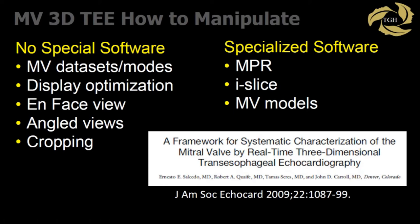What do we need to manipulate with our 3D data set? There are two groups: one is using no special software, and the other is using specialized software. Among the no special software group, you can look at how you acquire and optimize your 3D data set, the on-fast view — the standard view to display your 3D data set — angled views, and cropping. With specialized software, you can look at multi-planar reformatting or reconstruction, eye slice, and mitral valve models. We're going to spend time looking at all of these.